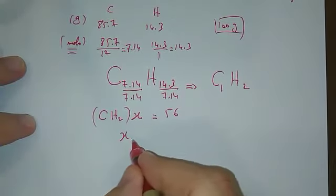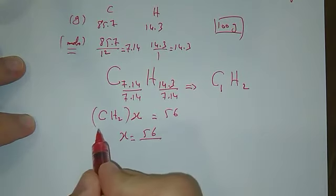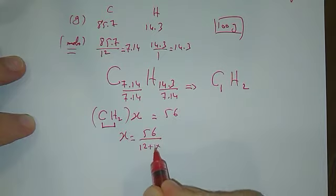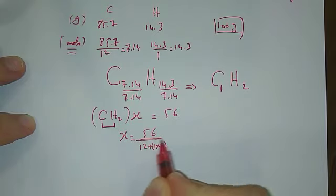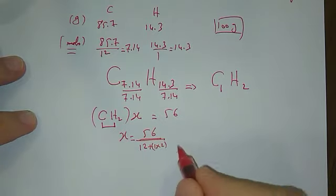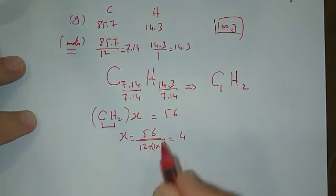To solve, X equals 56 over what? Over 12 plus 2, that's 12 plus 1 times 2, which is 2 for hydrogen, or the total molar mass of the empirical formula. It will be equal 4.